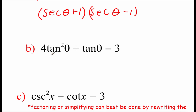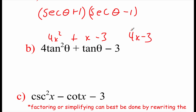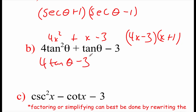In the next one, ignore the trig again — make it 4x squared plus x minus three. This is factoring a quadratic with an a value, so we do some guess-and-check factoring. It factors as 4x minus three times x plus one. But we had tangents instead of x's, so it's 4 tangent of theta minus three times tangent of theta plus one.